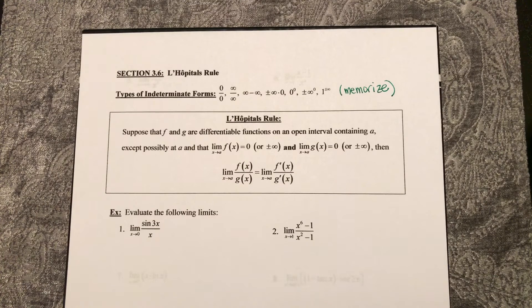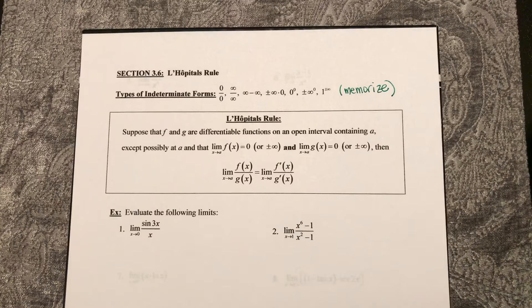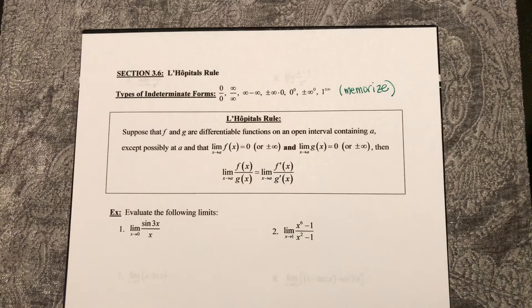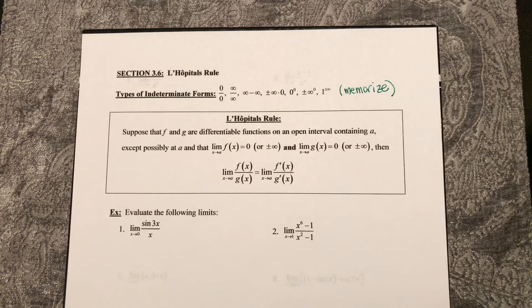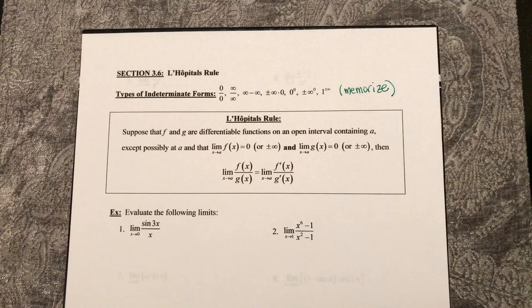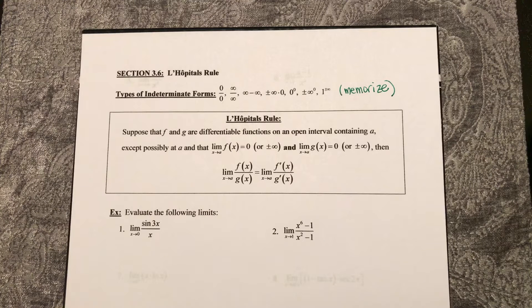So here in section 3.6, we are going to investigate L'Hôpital's rule, and this rule is used when we find limits that create one of these indeterminate forms: 0 over 0,